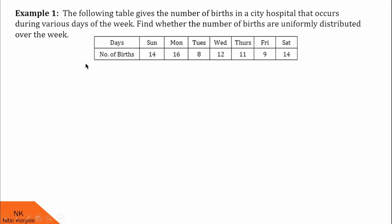In the first example, we are given that the following table gives the number of births in a city hospital that occurs during the various days of the week. We are asked to find whether the number of births are uniformly distributed over the week. In this table, you can see that the number of births over the week in this city hospital are given. On Sunday, there are 14 births. On Monday, there are 16. On Tuesday, there are 8. And similarly, on Saturday, there were 14 births.